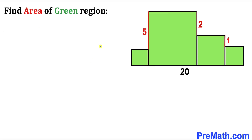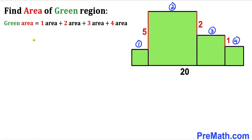Let's get started. Since we are dealing with four squares of various sizes, I'll label the first square as box number one, the second as box number two, the third as box number three, and the fourth as box number four. The total green shaded area equals the sum of the areas of box one, box two, box three, and box four.